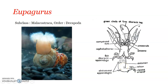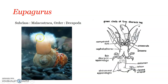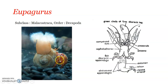Eupagurus search for abandoned, unoccupied shells and curl inside them to grow. When they grow in size, they abandon their old shell and search for a new, bigger shell to protect their soft abdominal region. Eupagurus carrying shells may also be associated with sea anemones. In this symbiotic association, sea anemones - which are sedentary - attach themselves onto the shells, while the hermit crabs can move and carry the sea anemone to new feeding areas. In return, the sea anemone's tentacles provide protection to the hermit crab inside.